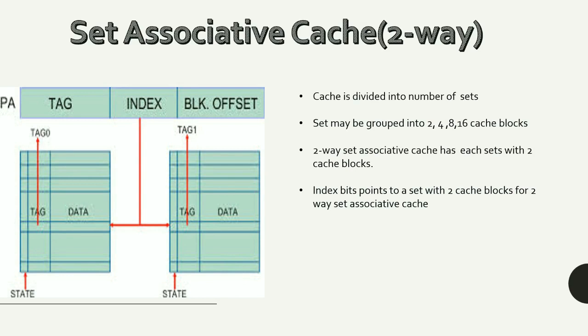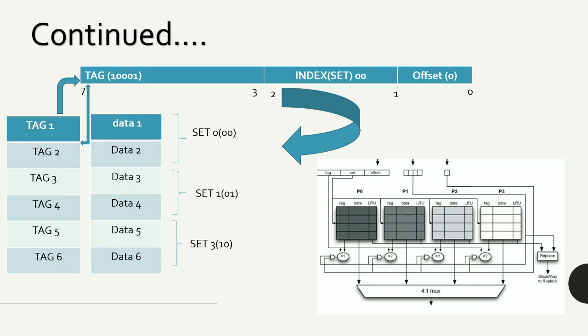Coming to the next type of cache mapping — set associative caches — I want to present two-way set associative caches. In a two-way set associative cache, the cache blocks are divided into a number of sets, with each set consisting of two cache blocks. The address is divided into: offset, used to select the particular byte in the cache block, and index, which points to the particular set rather than an individual cache block.